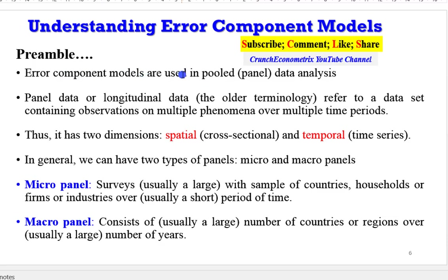Let's have a preamble. Error component models are used in pooled and panel data analysis. And by now, we know that panel data is also known as longitudinal data. They refer to a data set that has multiple observations over multiple time periods. A panel data also has two dimensions, the spatial, which is cross-sectional, and temporal, which is time series.